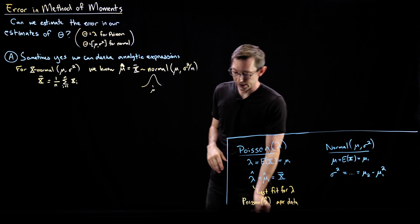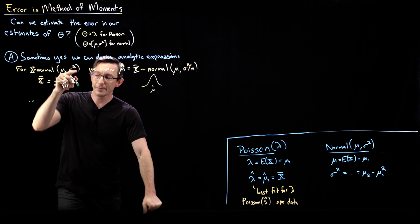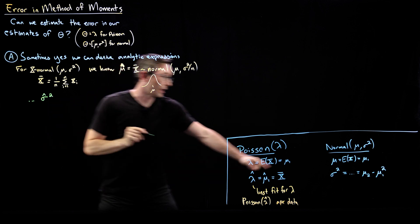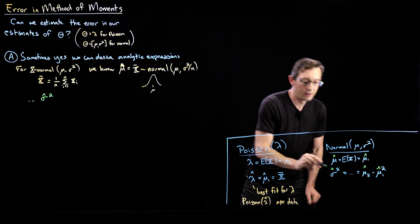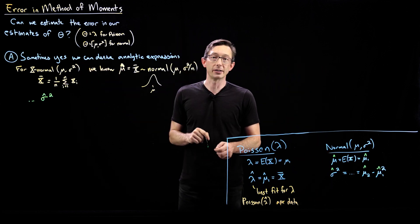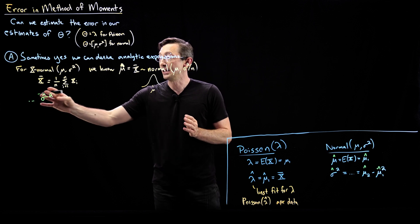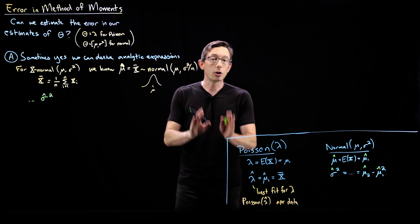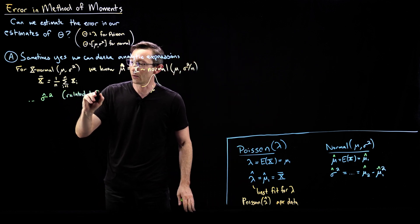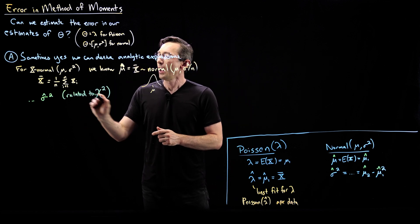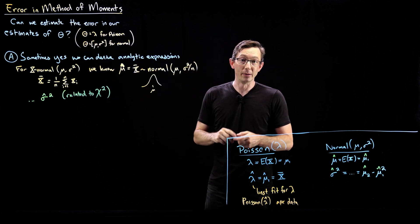Some cases are much harder. As a second example, estimating sigma hat squared: my estimate for the variance of my distribution is not normally distributed. It's a weird distribution and harder to derive the analytic expression for how it's distributed. It turns out to be related to the chi-squared distribution, which is another probability density function. It's much harder to derive an analytic expression for this error estimate in the method of moments.